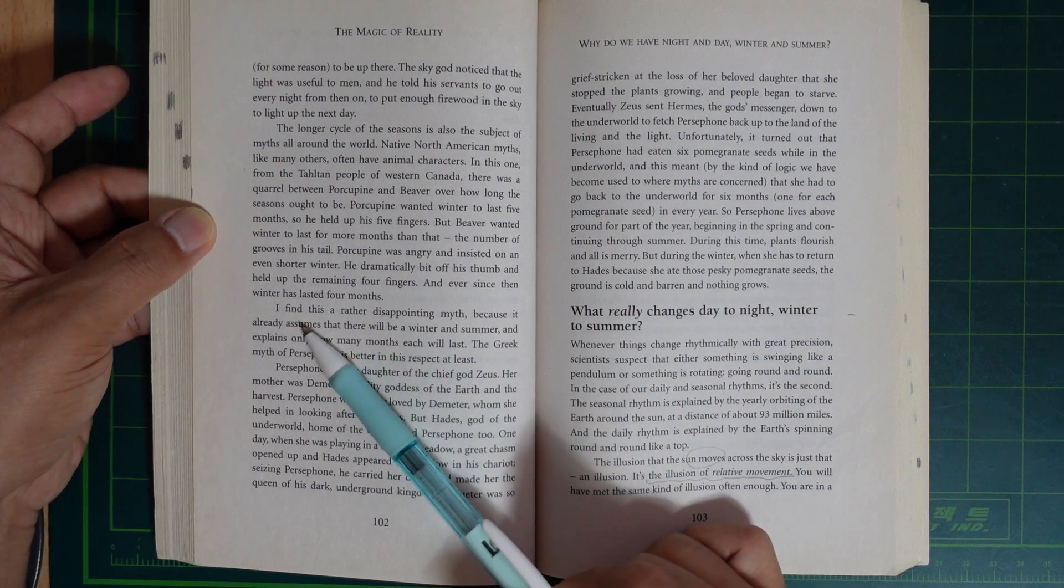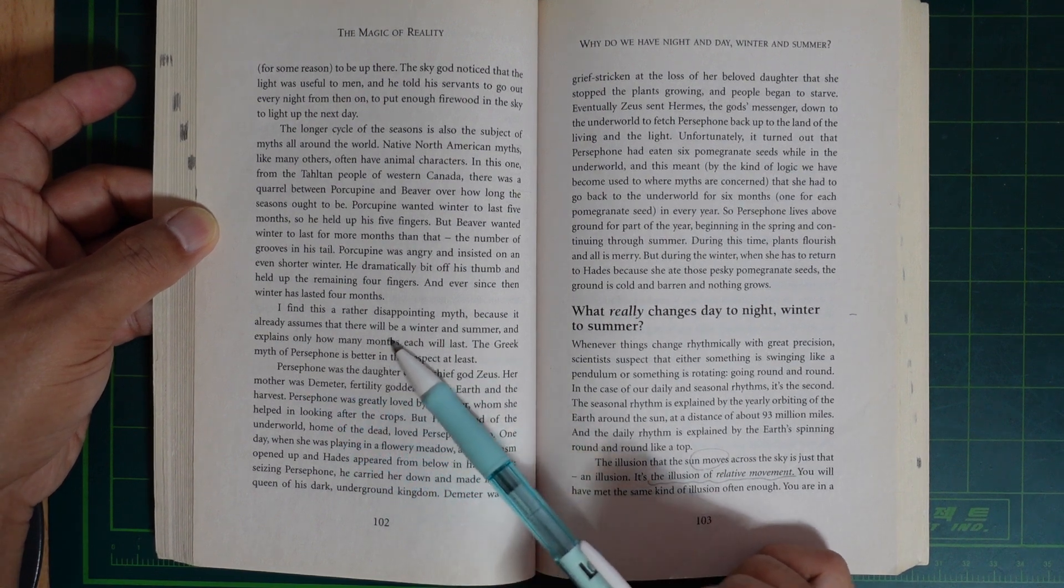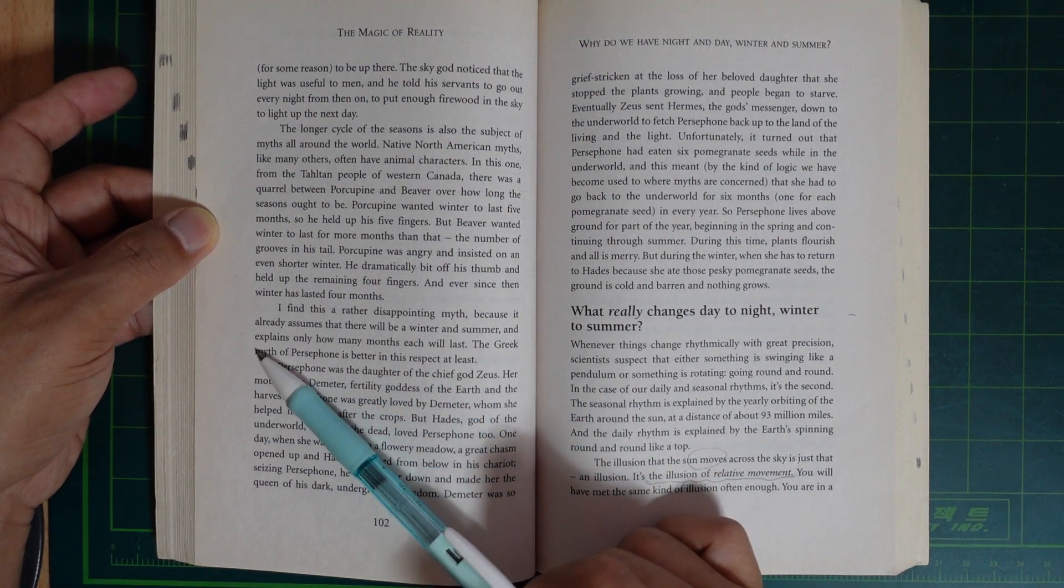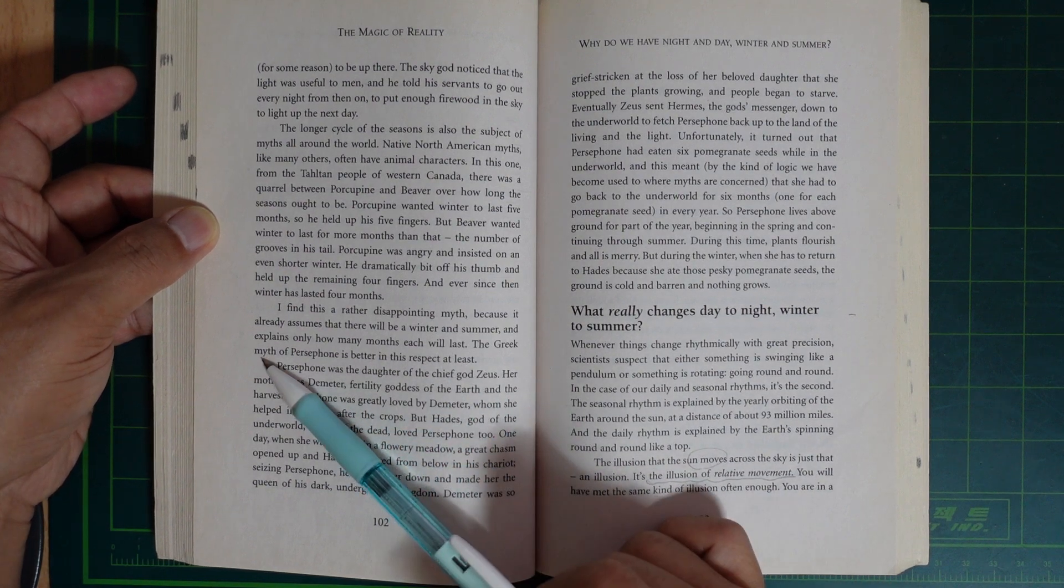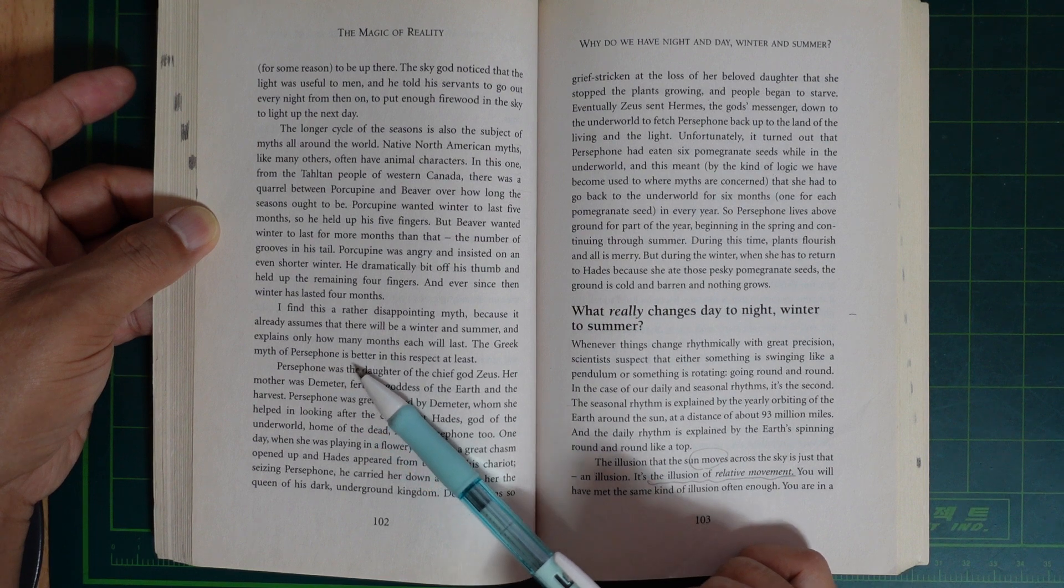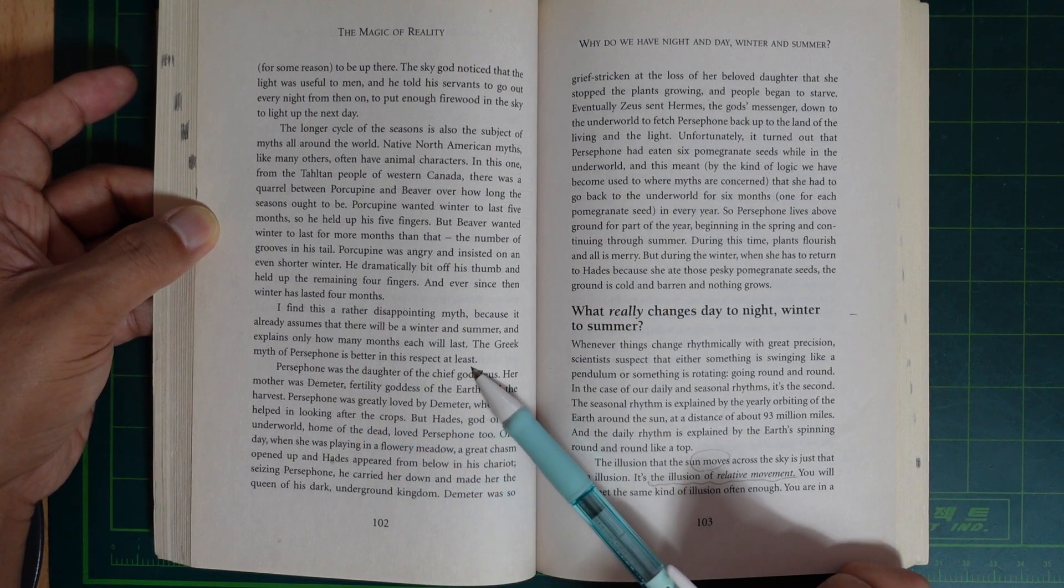I find this rather disappointing myth because it already assumed that there will be a winter and summer. It explained only how many months each will last. The Greek myth of Persephone is better in this respect at least.